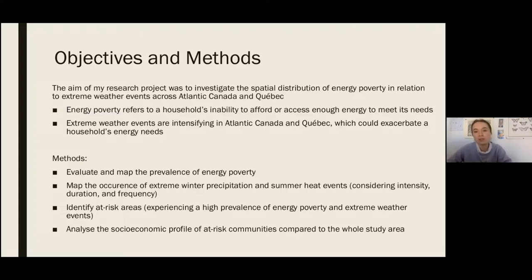So energy poverty refers to a household's inability to afford or access enough energy to meet its needs. So this includes heating and cooling needs, as well as fueling appliances. And then the extreme weather events I was looking at were extreme heat events in the summer and extreme winter precipitation events in the winter. And so these types of events can exacerbate a household's energy needs, hence exacerbating energy poverty.